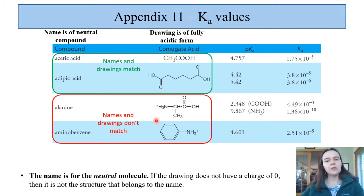Ultimately, what you need to remember is that the name is for the neutral molecule. If this drawing does not have a zero charge, then this is not the structure that belongs to the name. Alanine, for example, would be NH2, neutral, no positive charge.